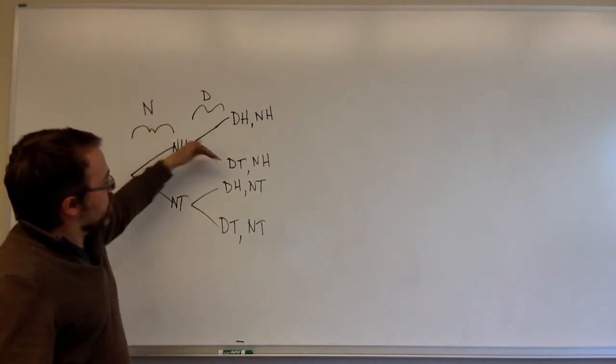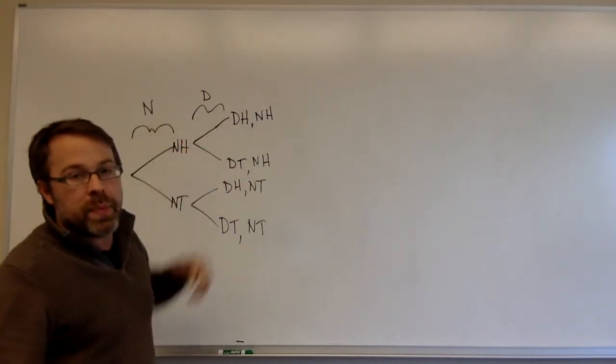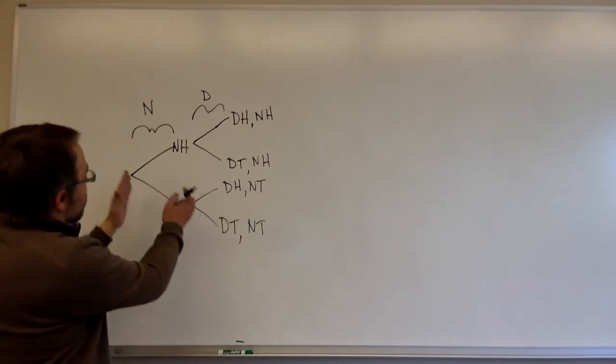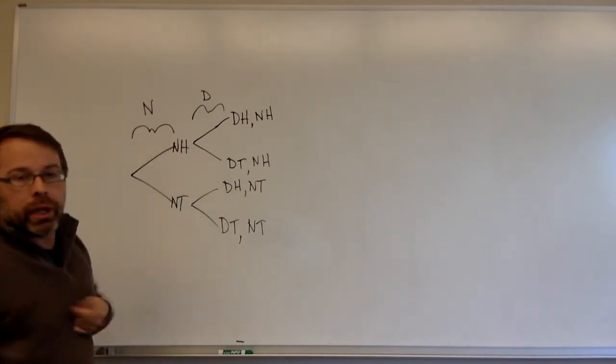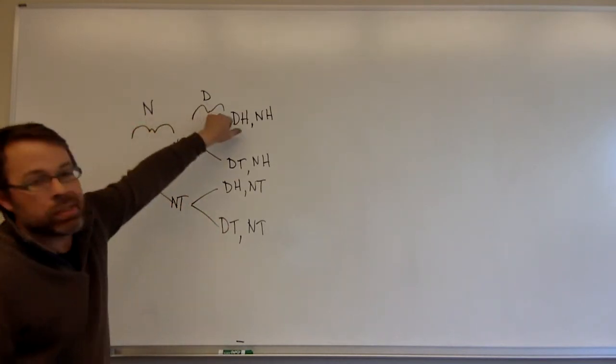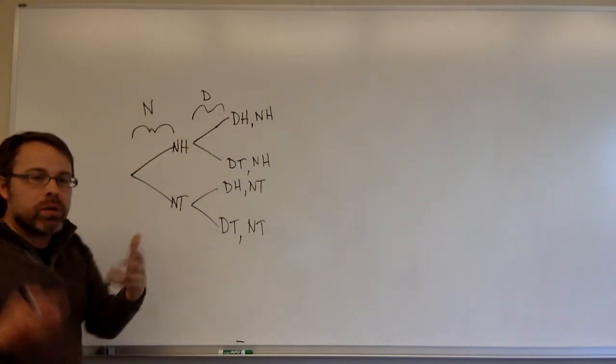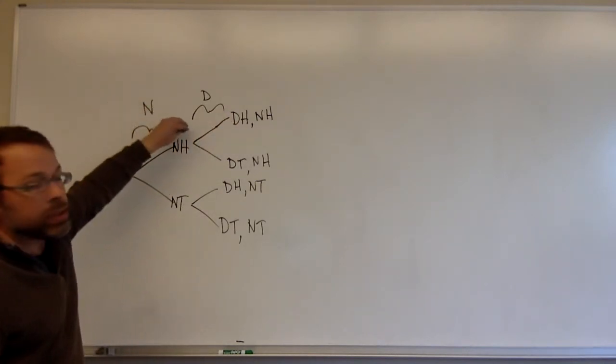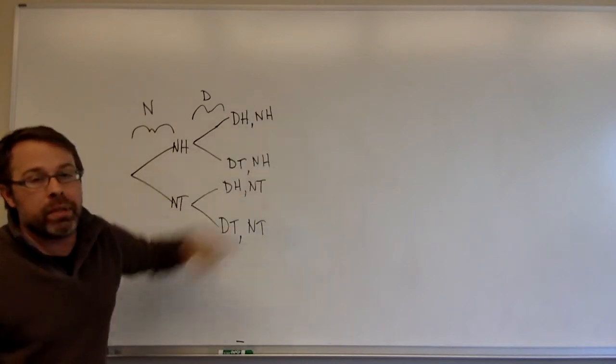We'll see that we can calculate the probability of each path. But for now, I just want to introduce this concept of what we're doing here. We have these two different events, and it makes the most sense if we think about the first thing that happened is this one, and then the second thing that happened is that one.